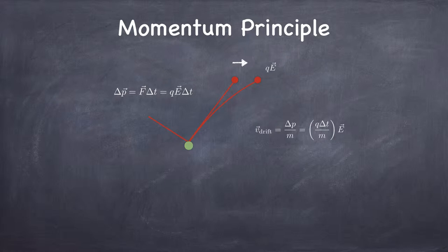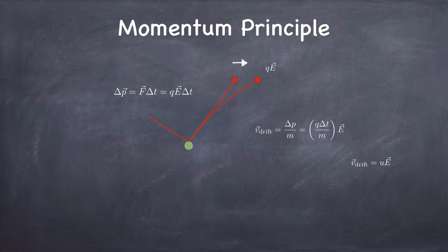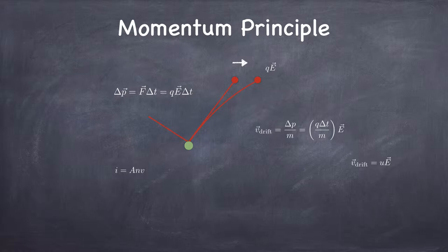The drift velocity ends up being proportional to the field. The stuff in parentheses — the mean free time between collisions, the effective mass of the charge carriers, and the amount of charge — are all intrinsic characteristics of the material. The proportionality constant, which is also an intrinsic property of the material, we call the mobility. The mobility tells us how much drift we get per unit of electric field applied. From last time, the electron current — the number of electrons passing a point per unit time — equals the cross-sectional area of the conductor times the number of charge carriers per unit volume times their average velocity. We now know that average velocity is just the drift velocity, proportional to the field.